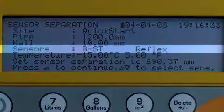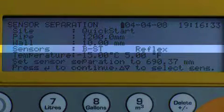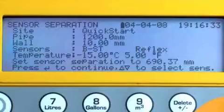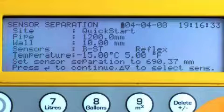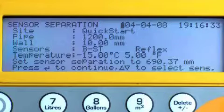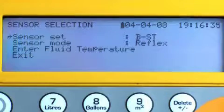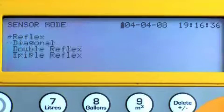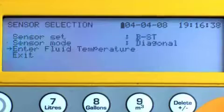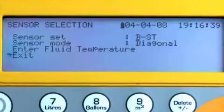The mode of operation just demonstrated is called reflex mode. On large pipes and potentially difficult applications, we may need to set up the sensors in diagonal mode to improve signal levels. For diagonal mode operation, press scroll and select sensor mode, press enter and select diagonal mode, scroll down to exit and press enter.